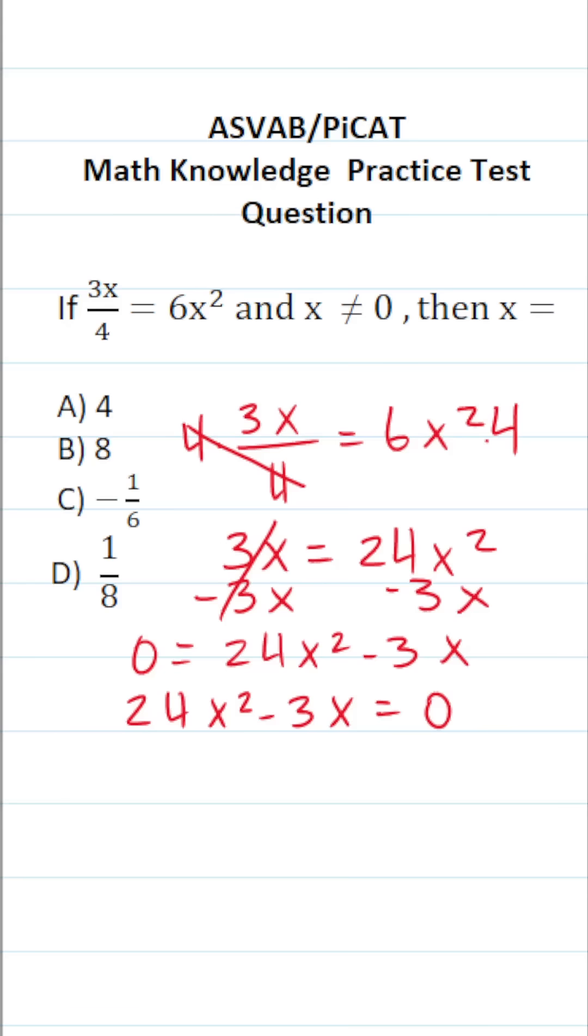And you should recognize right now that we can factor out a 3x from 24x squared minus 3x. So that's what I'm going to do. This is going to become 3x, and this leaves us with 8x minus 1 in parentheses.